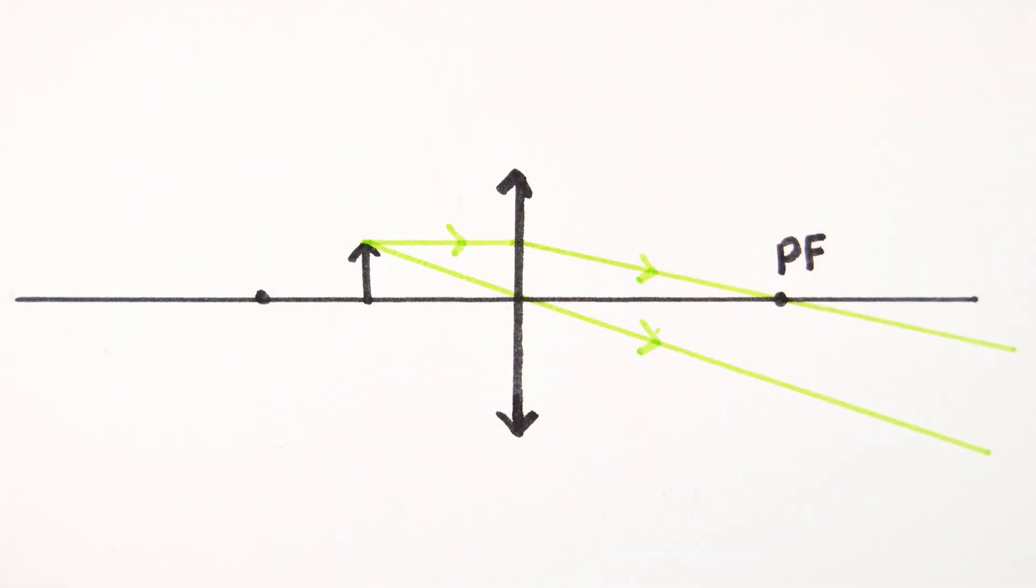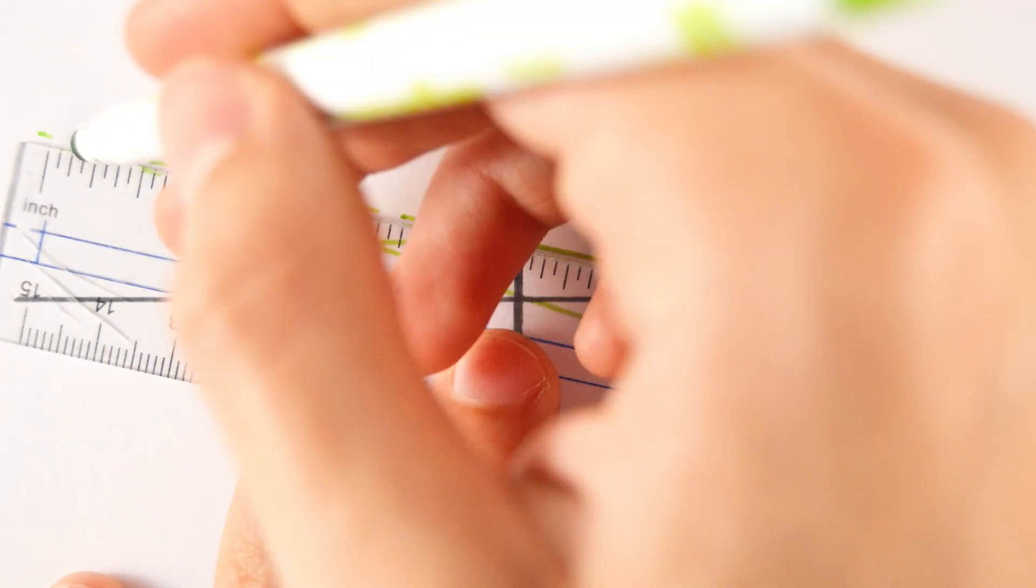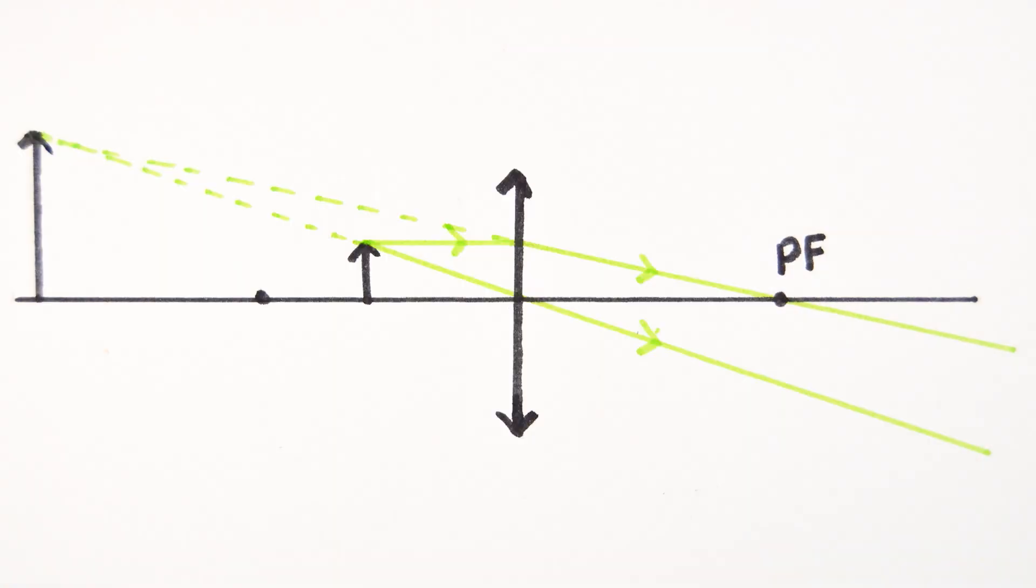The image you see through a magnifying glass is magnified, funnily enough, upright and virtual, because it's on the same side as the object. This happens to converging lenses when the object is placed between the lens and the principal focus.